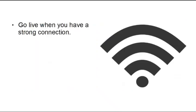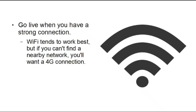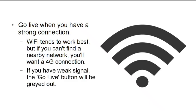You should also go live when you have a strong connection — Wi-Fi tends to work best, but if you can't find a nearby network you'll want a 4G connection. If you have a weak signal the Go Live button will be greyed out and you won't be able to broadcast, so make sure you've sorted that ahead of time. When planning where to do your broadcast, make sure it's somewhere you're going to get a nice strong signal.